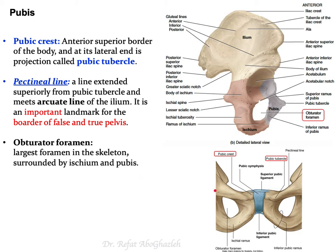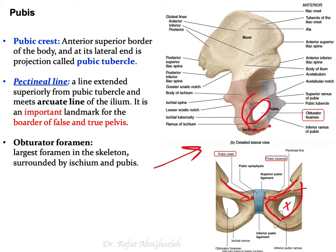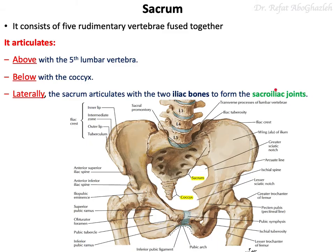The body of the pubis has a pubic crest near the midline, extending laterally to form the pubic tubercle. From the pubic tubercle the pectineal line extends posterolaterally. The obturator foramen is formed by both the pubis and ischium — the ilium has no contribution to it.